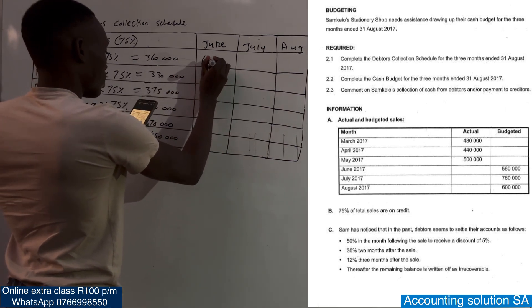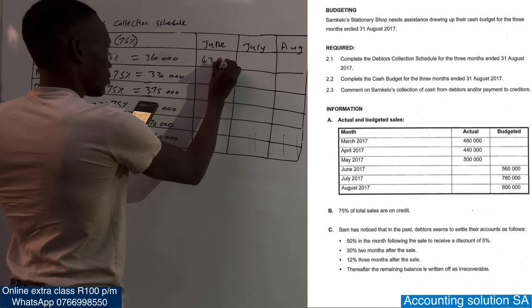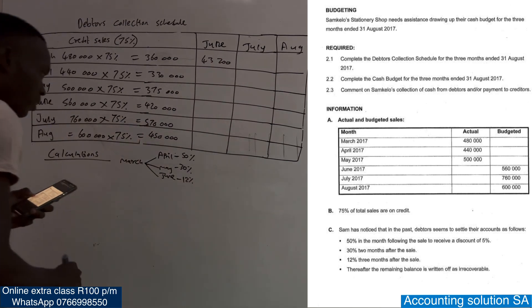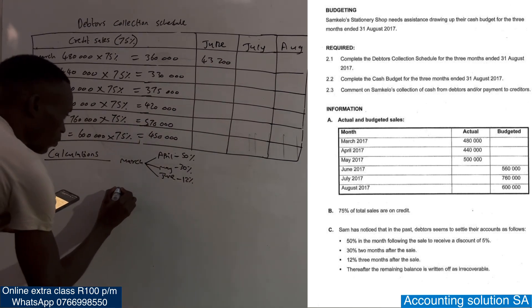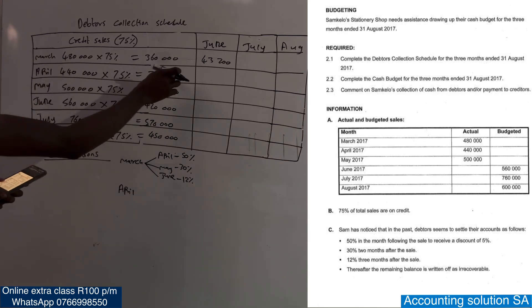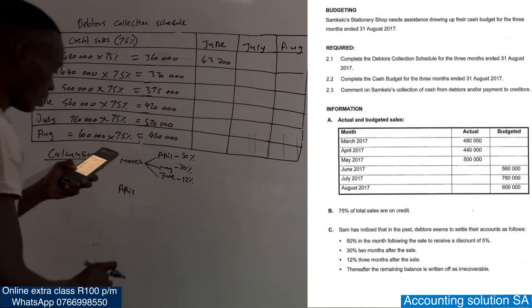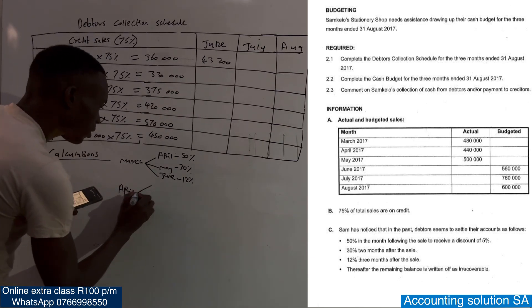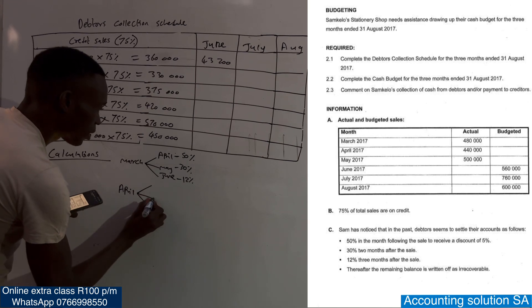For March's credit sales: in June we collect the 12% portion. 12% of 360,000 gives us 43,200. Now let's go to April. April's credit sales are 330,000.